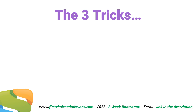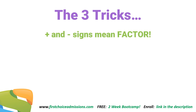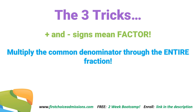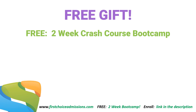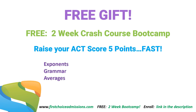Great job. So the three tricks are: number one, plus and minus signs mean factor; number two, multiply the common denominator through the entire fraction in the very first step, because that gets rid of the denominator and we hate dealing with denominators; and number three, multiplying exponents means get the bases the same — as soon as you have the bases the same, it's really easy to multiply the exponents together. These three tricks come up all the time on the test, so knowing them is definitely going to increase your score. And don't forget your free gift: a two-week crash course designed to raise your ACT score five points fast.